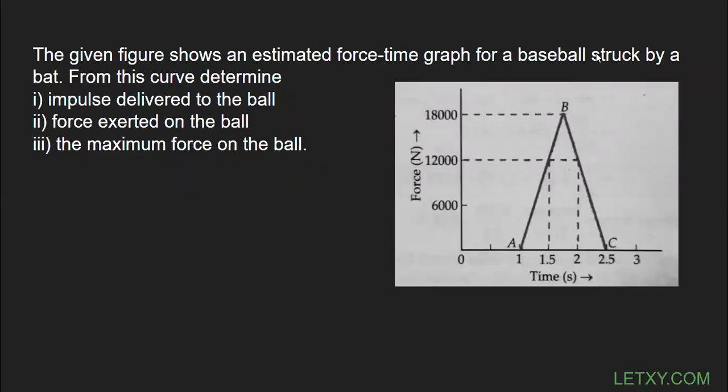Hello everyone. The question is: the given figure shows an estimated force-time graph for a baseball struck by a bat. From this curve, determine the impulse delivered to the ball. We know the area under the force-time graph gives impulse, so we have to find the area of this graph.